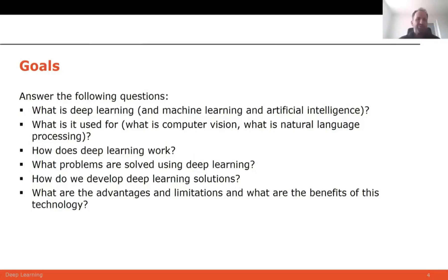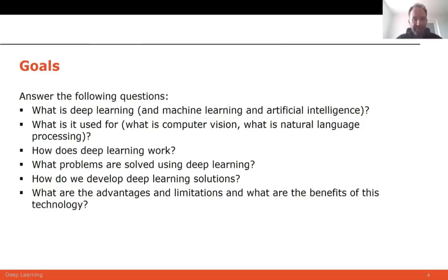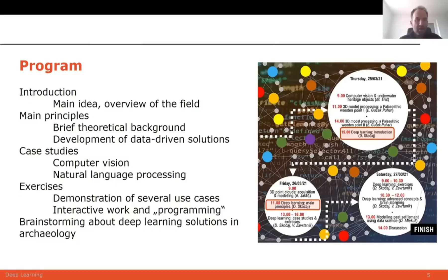Our goal is to try to answer the following general questions: what deep learning is, what machine learning is, what artificial intelligence is, and what it is used for. We'll be talking mainly about computer vision and natural language processing that can be used in your area of expertise. How does deep learning work? What problems can be solved? How do we develop such deep learning solutions? What are the advantages and limitations? I will make an overview of the field, presenting the main principles with a brief theoretical background and a couple of equations.